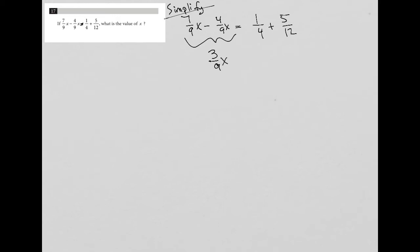Again, 3/9 can be reduced to 1/3. So really what I have here is 1/3x. 3 goes into 3 once, 3 goes into 9 three times, so 1/3x.